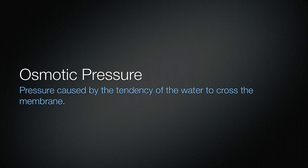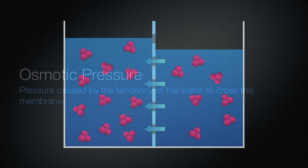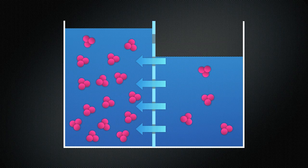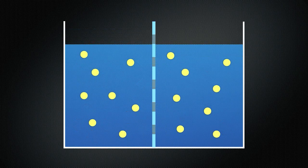The term osmotic pressure is the pressure caused by this tendency for water to cross the membrane. When there is little difference between the osmolarities on either side of a membrane, the osmotic pressure is low. When the difference is high, the osmotic pressure is high. It should be noted that osmotic pressure is only influenced by particles that cannot cross the membrane, as particles that can easily cross will be present in equal concentrations on either side.